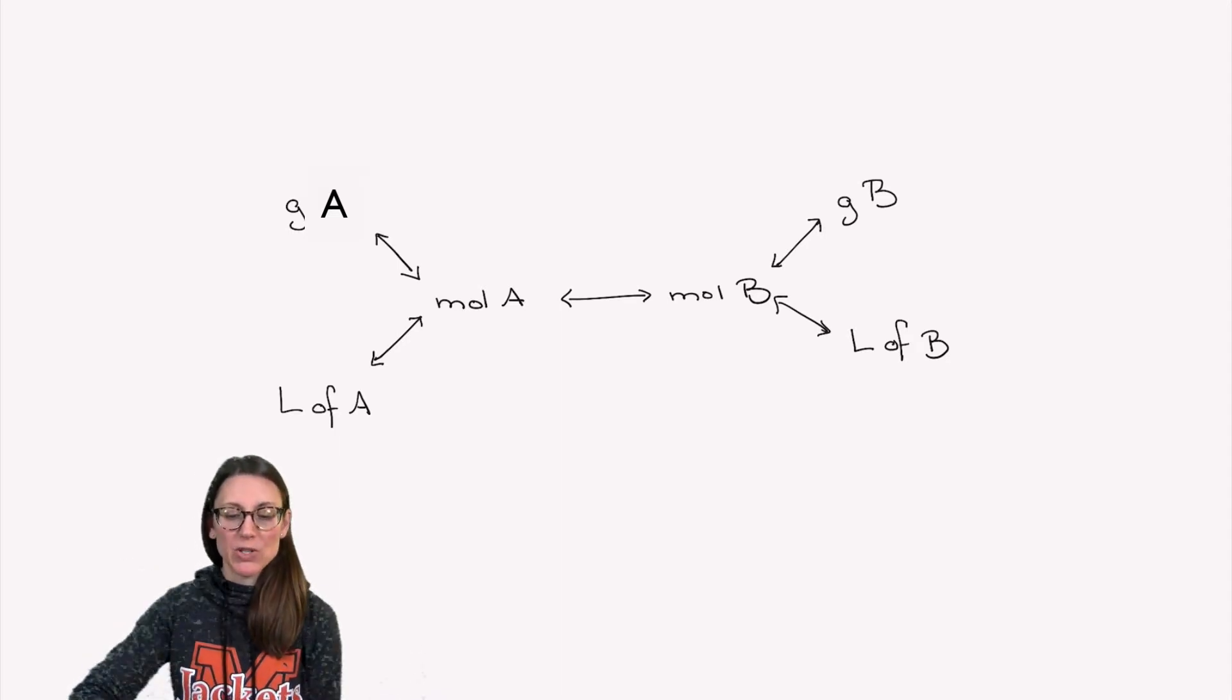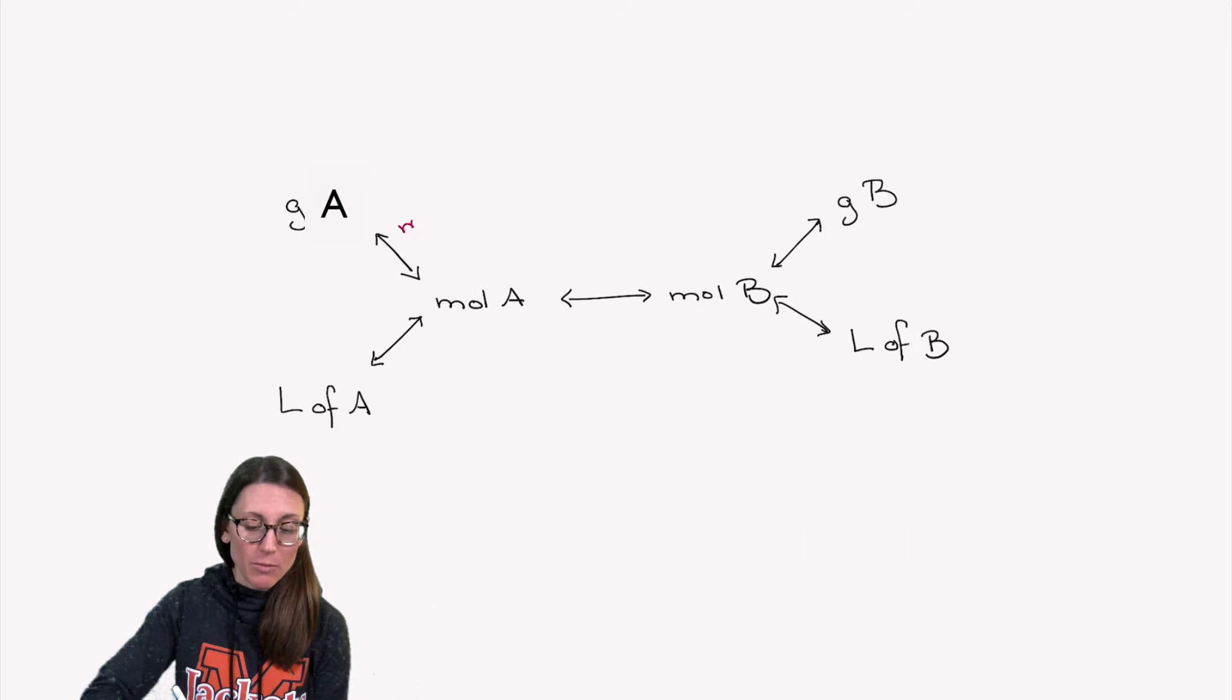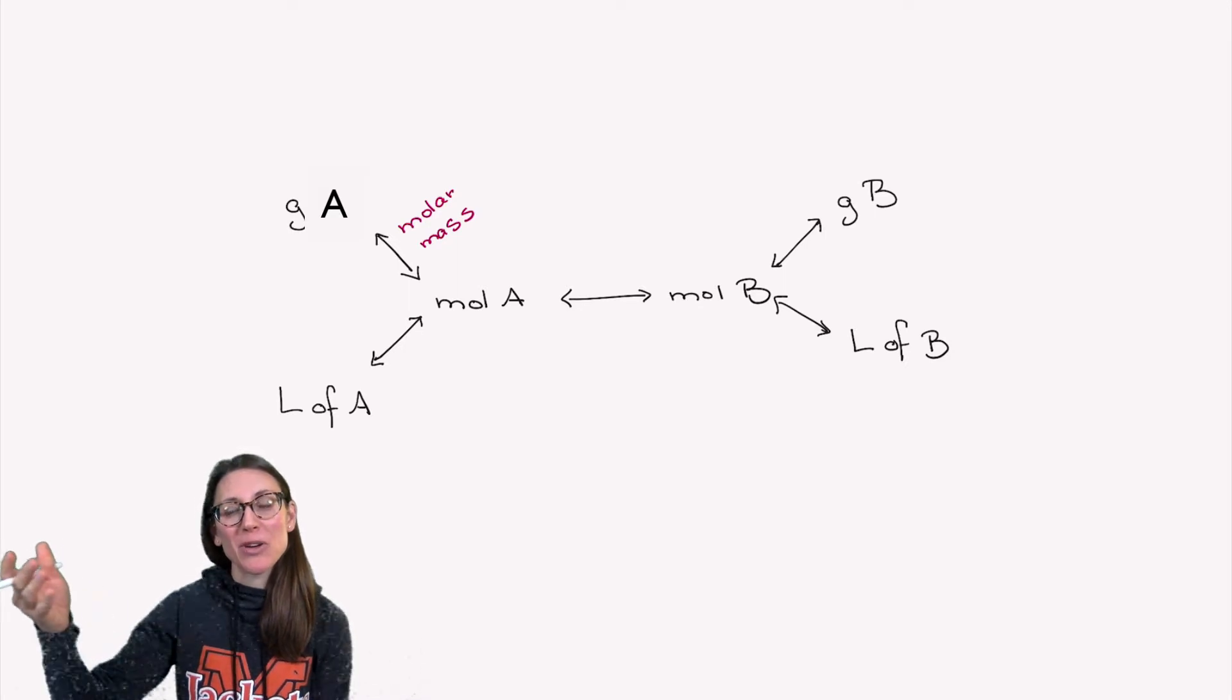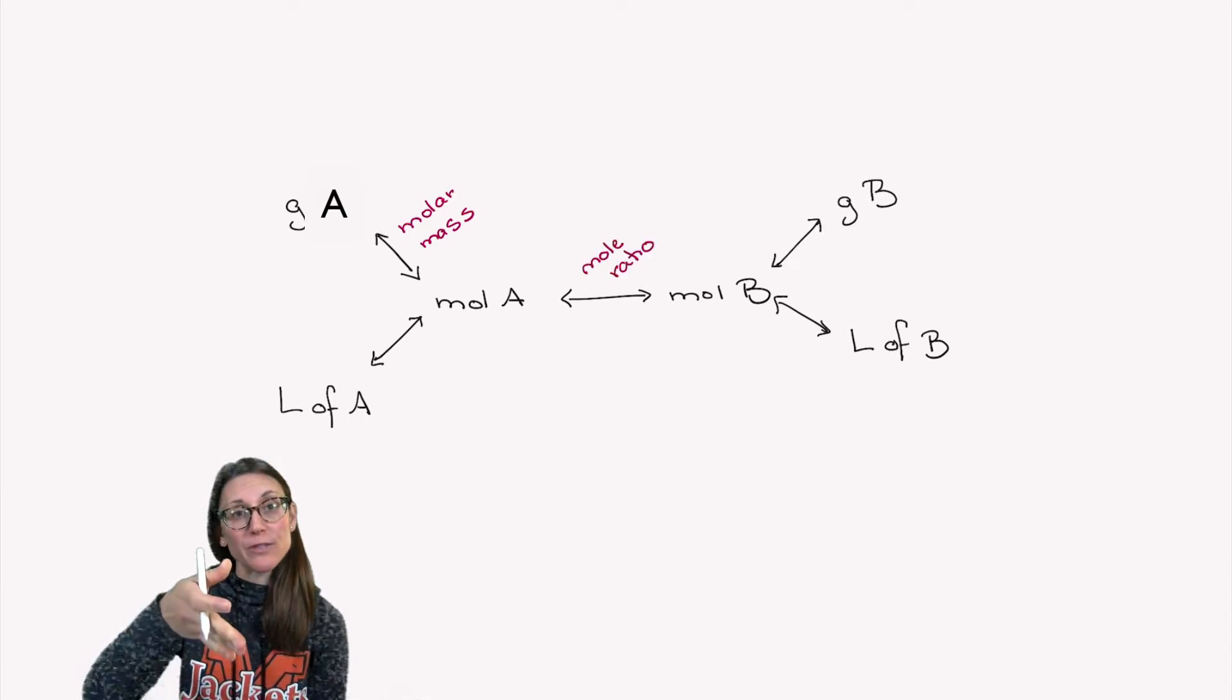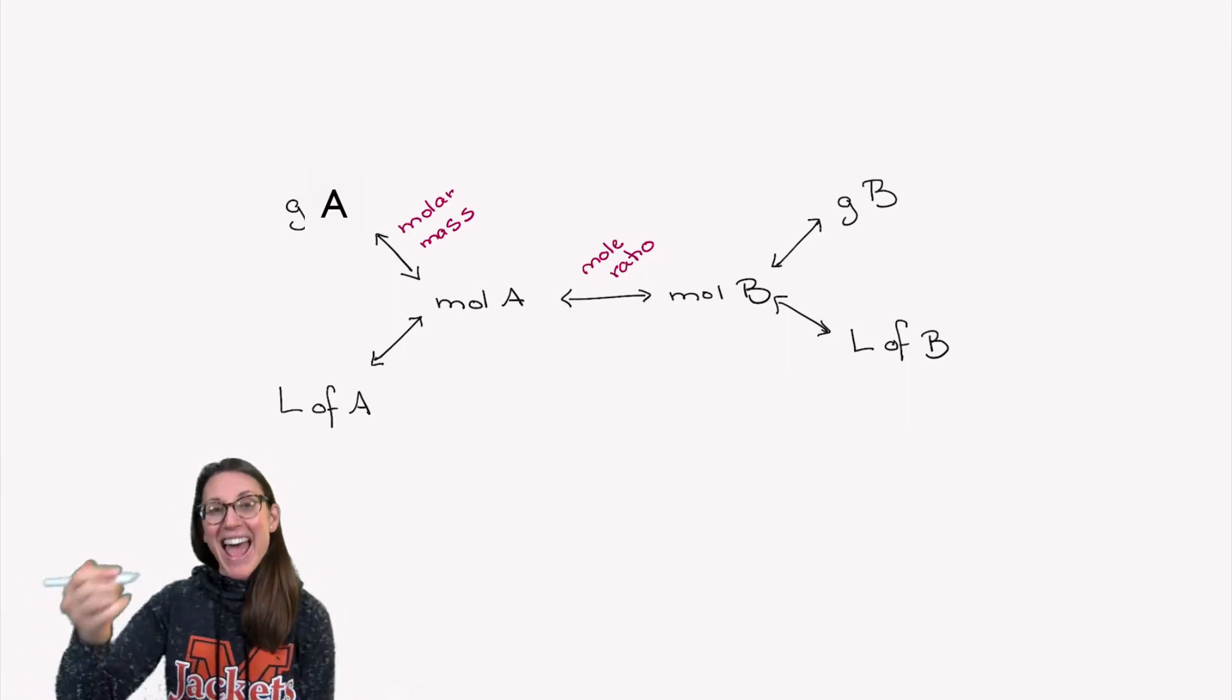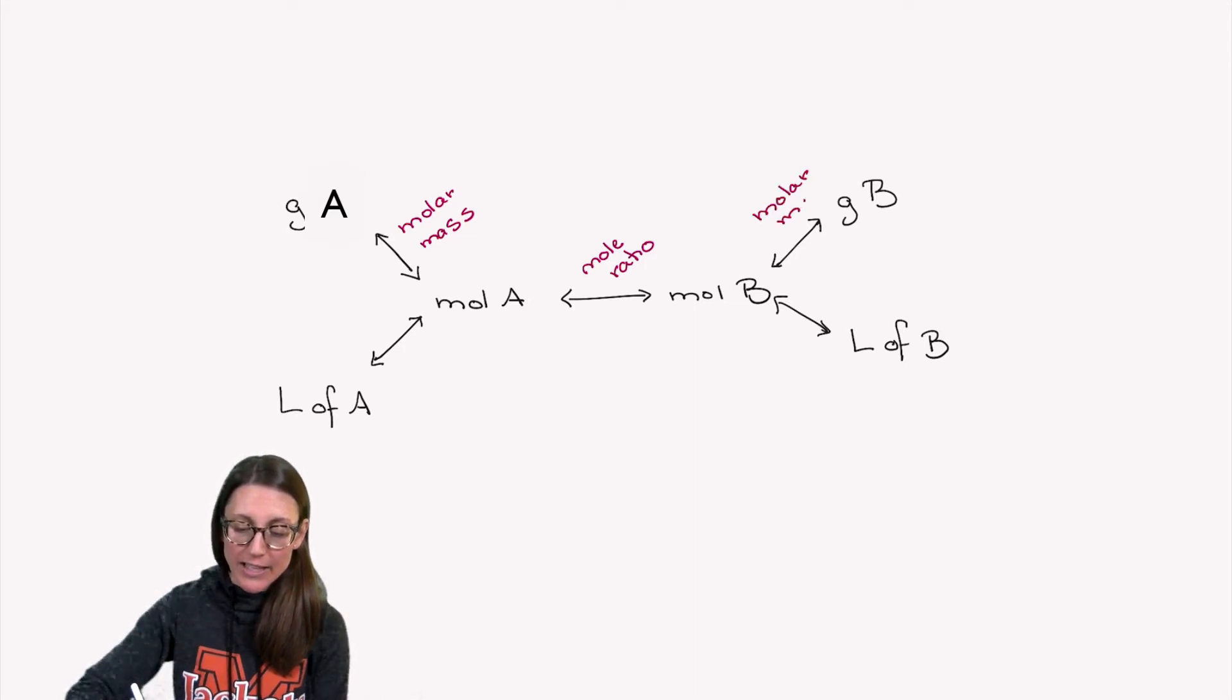When we talked about stoichiometry before, we would start with grams of a material, use the molar mass to convert to moles, and then once we had moles, we would use that balanced chemical equation and the coefficients to find the mole ratio. That would allow us to convert from the moles of the first chemical to the moles of our target. Then once we had the moles of the target, we would go back to the periodic table and use the molar mass to calculate grams.